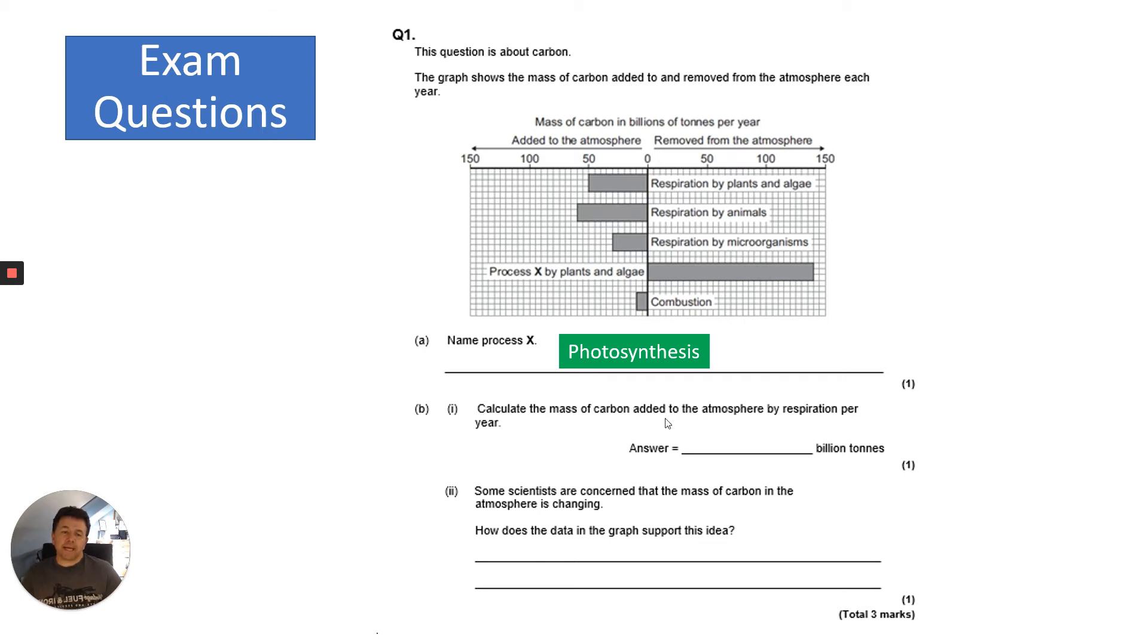Then it says calculate the mass of carbon added to the atmosphere by respiration per year. You need to look at the left side of the graph and add up the bars. We need to look at respiration by plants and algae, respiration by animals, and respiration by microbes. We're not going to add up combustion because that is not related to respiration. So we need to read off the scale - 50, 60, and 30 - add those up and you get 140.